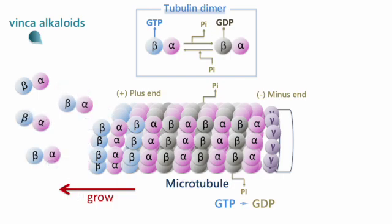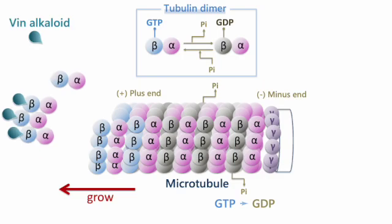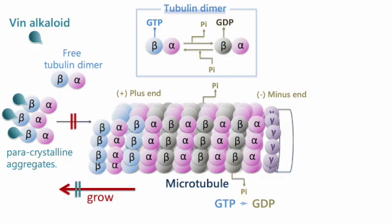Another theory proposes that vinca alkaloids bind the beta subunit of tubulin dimers in the vinca domain, causing the formation of paracrystalline aggregates, thereby reducing the availability of free tubulin dimers for microtubule assembly.